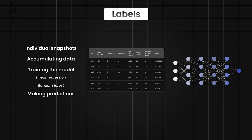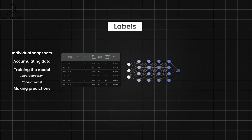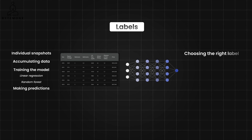After training, we have a model. We can now input the details of a new house currently on the market and the model predicts a likely selling price range. In supervised learning, choosing the right label is crucial because it directly guides what the model is trained to predict.